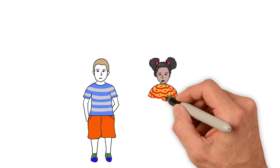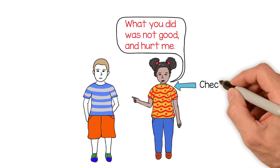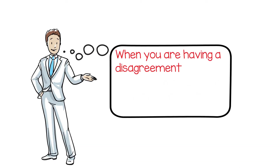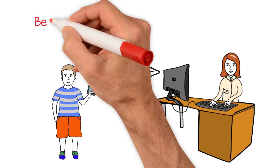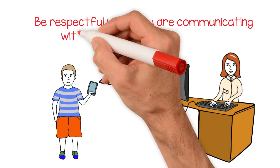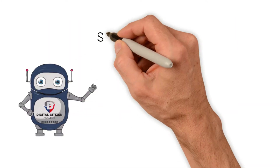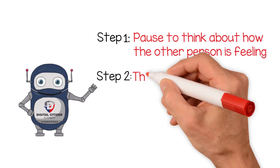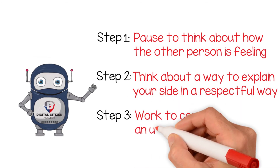When you have a disagreement with a friend, family member, or classmate, you can usually tell how the other person is feeling by the tone of their voice and by their body language. When you are having a disagreement online, it can become difficult to understand how the other person is feeling. This is why it is very important to be respectful when communicating with someone through a device. To handle disagreements online, Digi remembers these three easy steps: pause to think about how the other person is feeling, think about a way to explain your side in a respectful way, and work to come to an understanding.